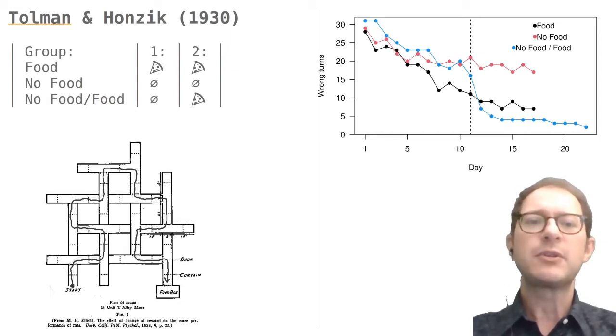Tolman and Honzik's conclusion was that the rats had learned a mental map of the maze during the first 10 days and then used it to come up immediately with a route to the food when this was introduced.